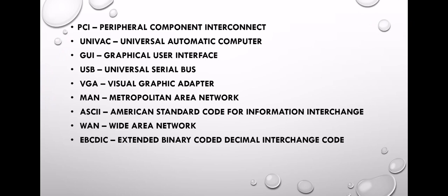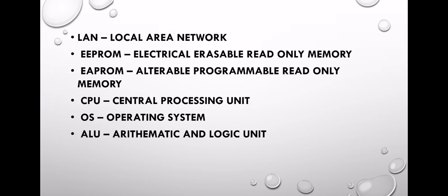MAN: Metropolitan Area Network. ASCII: American Standard Code for Information Interchange. WAN: Wide Area Network. EBCDIC: Extended Binary Coded Decimal Interchange Code. LAN: Local Area Network. EEPROM: Electrical Erasable Read-Only Memory. APROM: Alterable Programmable Read-Only Memory. CPU: Central Processing Unit. OS: Operating System. ALU: Arithmetic and Logical Unit.